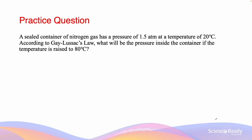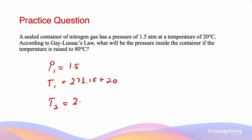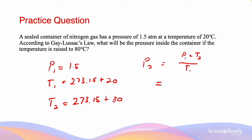The next question says: a sealed container of nitrogen gas has a pressure of 1.5 atmospheres and a temperature of 20 degrees Celsius. According to Gay-Lussac's law, what will be the pressure inside the container if the temperature is raised to 80 degrees Celsius? We take the same steps, converting Celsius to Kelvin: P1 = 1.5, T1 = 273.15 + 20, T2 = 273.15 + 80. So P2 = P1 × T2/T1, which equals 1.8 atmospheres.